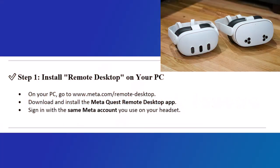Step 1: Install Remote Desktop on your PC. On your PC, go to www.meta.com/remote-desktop. Download and install the Meta Quest Remote Desktop app, then sign in with the same Meta account you use on your headset.